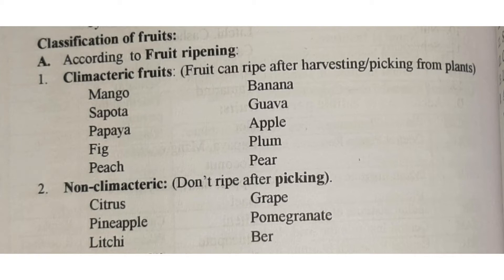Now, non-climacteric fruits will only ripen while on the plant. Once we harvest them, they won't get riper anymore. Examples: citrus, pineapple, lychee, grape, pomegranate, and ber.